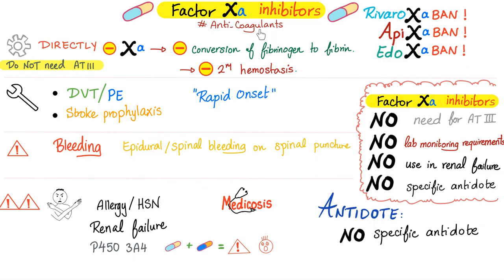Function: these are anticoagulants that directly inhibit factor XA, which inhibits the conversion of fibrinogen to fibrin, inhibiting secondary hemostasis. There is no need for antithrombin 3 stimulation. Indications: DVT, PE, and stroke prophylaxis. These have rapid onset and are oral medications — contrast that with warfarin, which was also oral but had a slow onset.